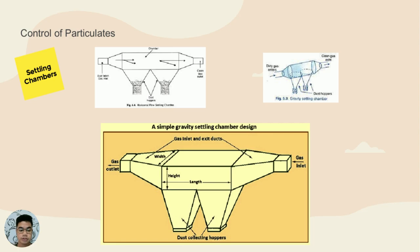Control of Particulates: Settling Chambers. Settling chambers are devices that are introduced to the industrial exhaust system to remove solid particles from the emission. The particles, while passing through the chamber, settle over the sediment phase under the action of gravity, thus cleaning the dust.